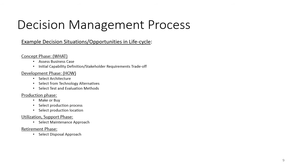In the utilization support phase, there are several different approaches to maintenance and you will have to pick one. Similarly for the retirement phase, there are alternative ways of disposing of a system and it is necessary to pick the best one for disposal. This is a summary — not a complete list — but representative of the kinds of situations in which the decision management process is used.